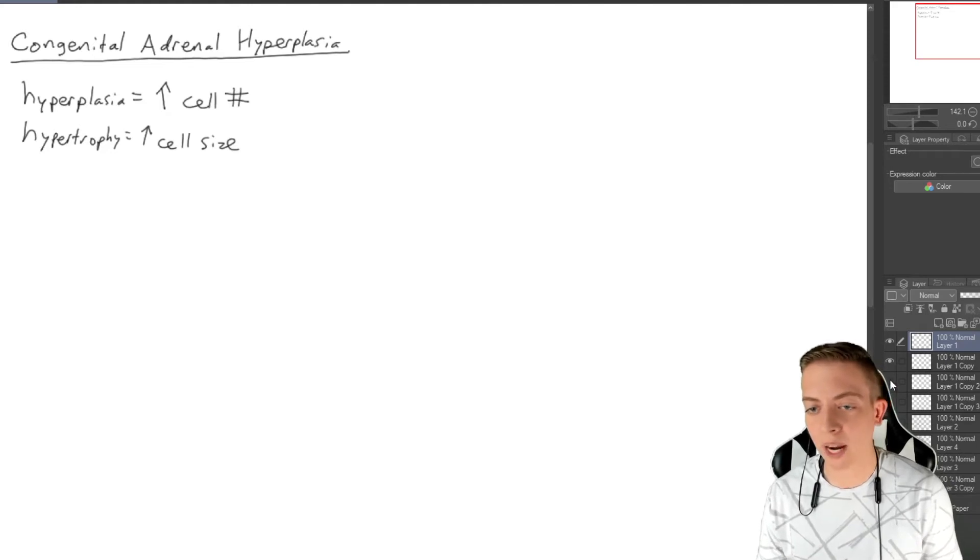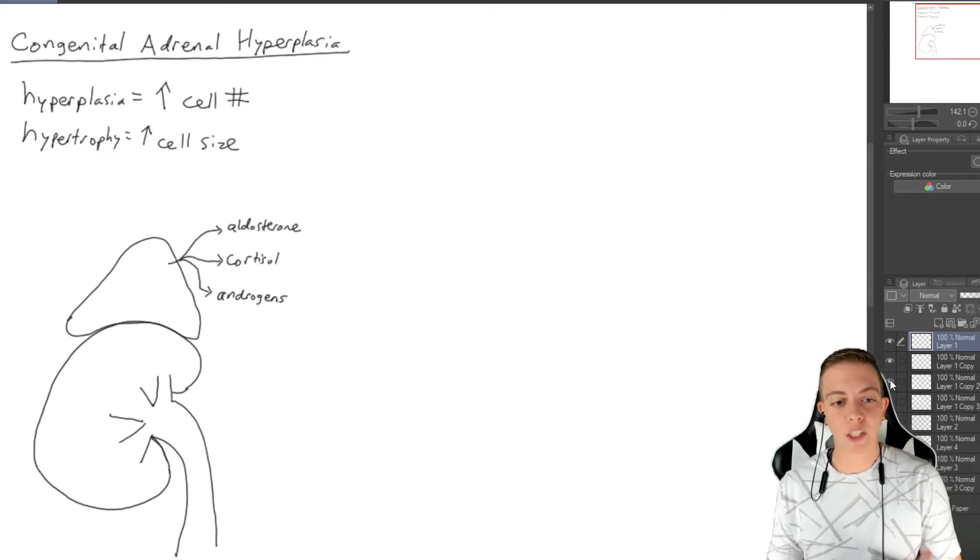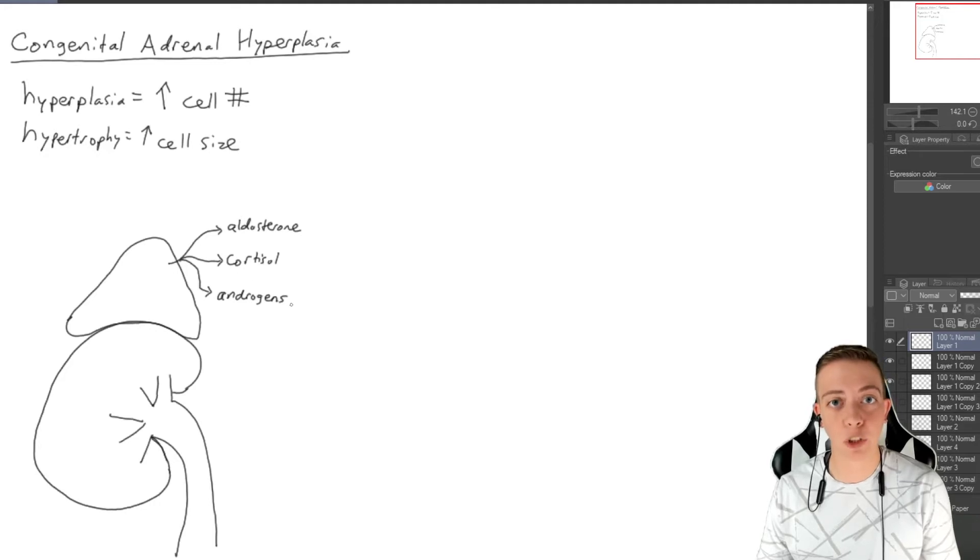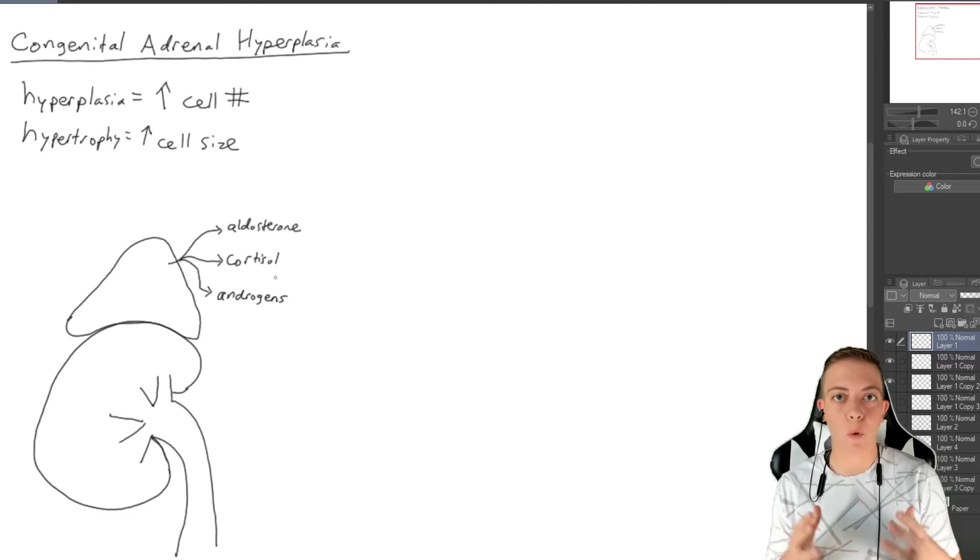We're just going to look at this and we're going to bring back some very familiar drawings, namely the adrenal gland and our kidney. If you remember from our videos on the adrenal cortex, we produce aldosterone, cortisol, and androgens in the adrenal cortex. When we have decreased amounts of aldosterone or cortisol, we get increased androgens.